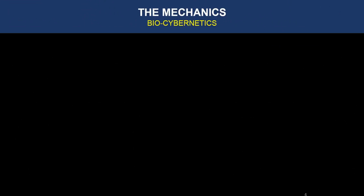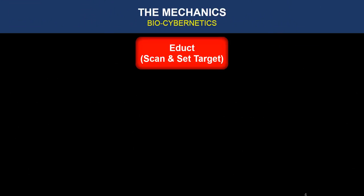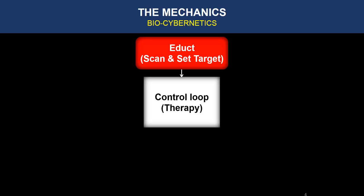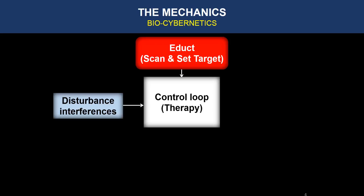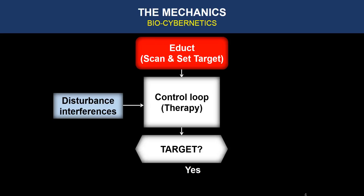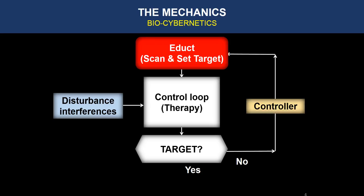The machine goes into these procedures. First we call educt — this is the stage where it scans and the machine itself sets the target to achieve. Then it goes into the control loop; this is the actual therapy that's happening. And there will be some interferences from outside, like the movement of the patient or maybe the electrodes coming out. Then the machine actually looks for whether it has achieved the target. If the answer is no, it goes back to the first stage where it scans again and sets a new target.